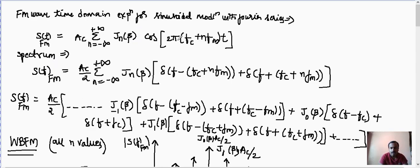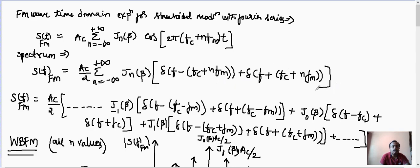This is the last but one step in the derivation. After this we took the Fourier transform on both sides. The spectrum S(F) is AC/2 times the summation of Jn(beta) into [delta(F minus (FC + n·FM)) plus delta(F plus (FC + n·FM))]. This is the last equation of the derivation of the spectrum — the frequency domain description of the FM wave for single-tone sinusoidal modulation using Fourier series. This is a 10-mark question.